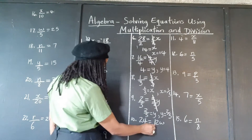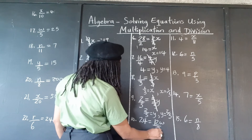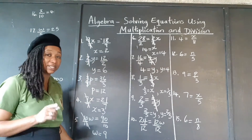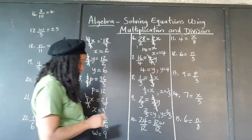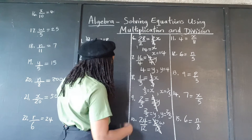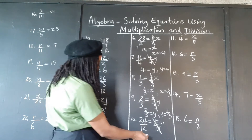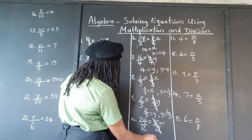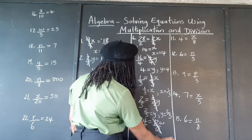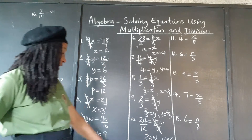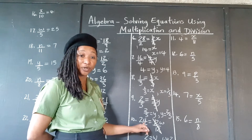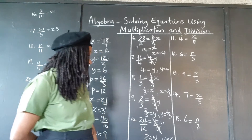We're going to divide by the coefficient of w, which is 12. We have to remember to do the same thing on both sides. The 12s cancel. 24 divided by 12 — we know our 12 times table — we know that's 2. So 2 is equal to w, or w is equal to 2. We can always plug it back in and check: 12 times 2, do we get 24? Yes, 12 times 2 gives 24.